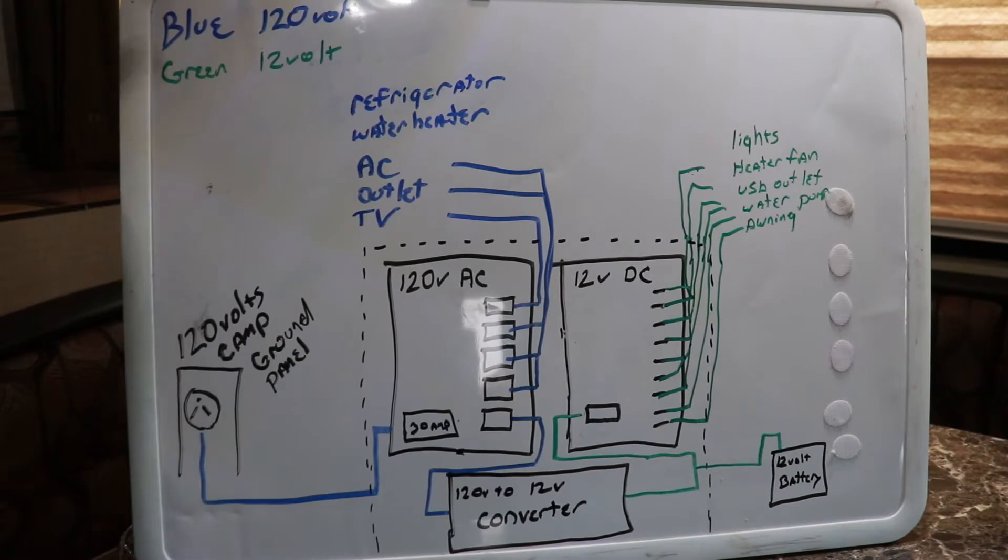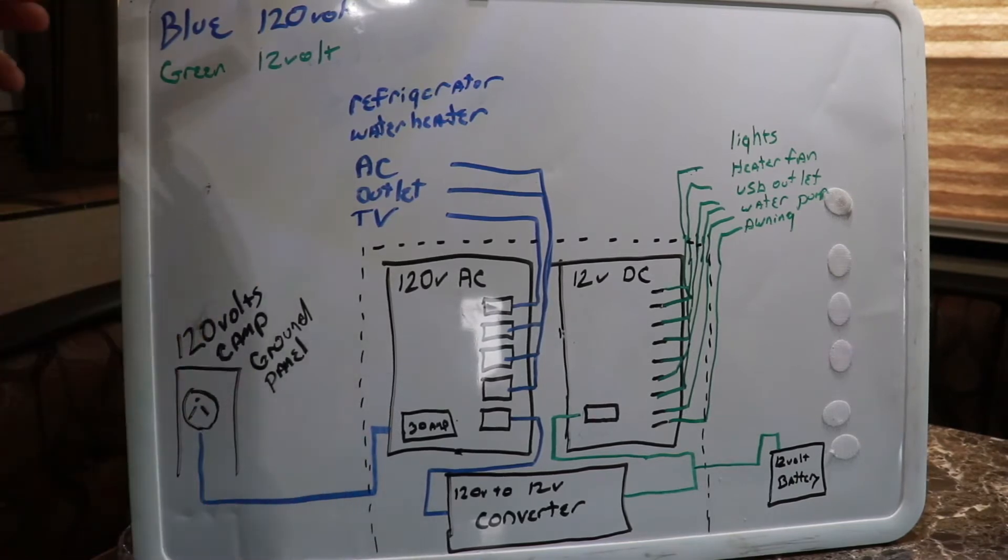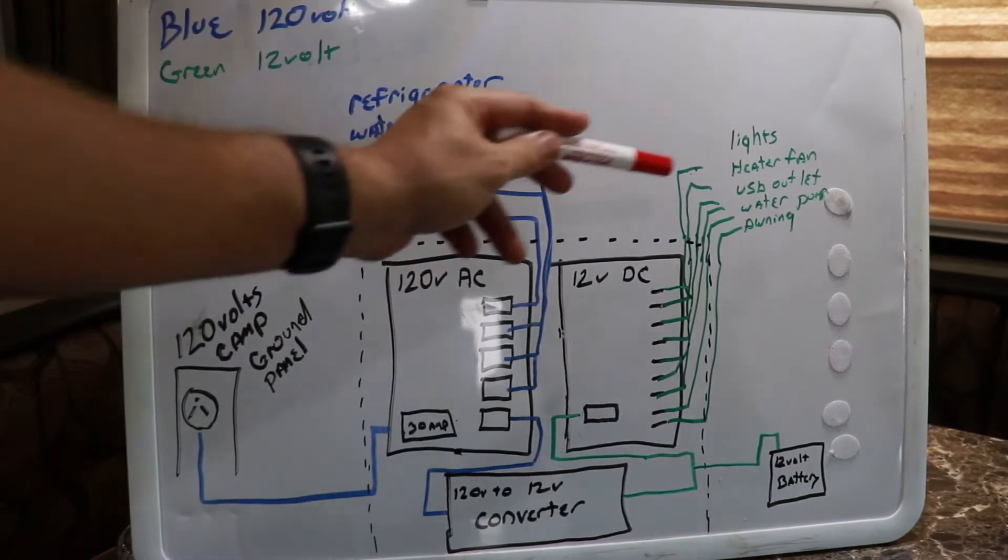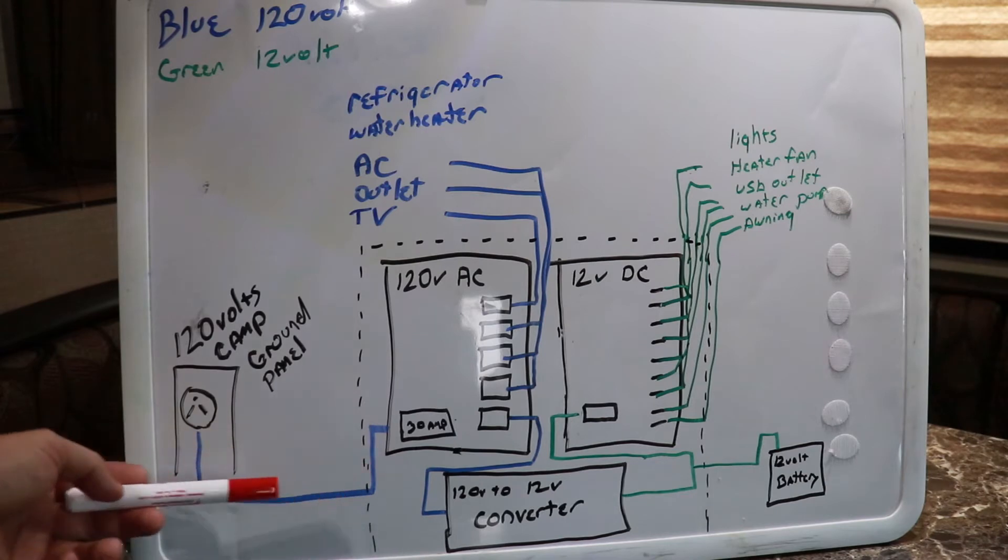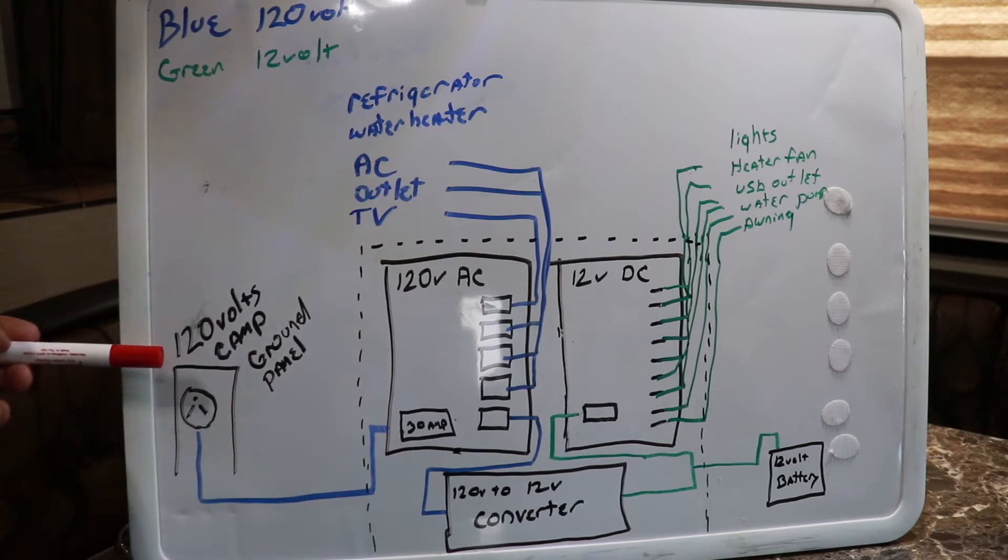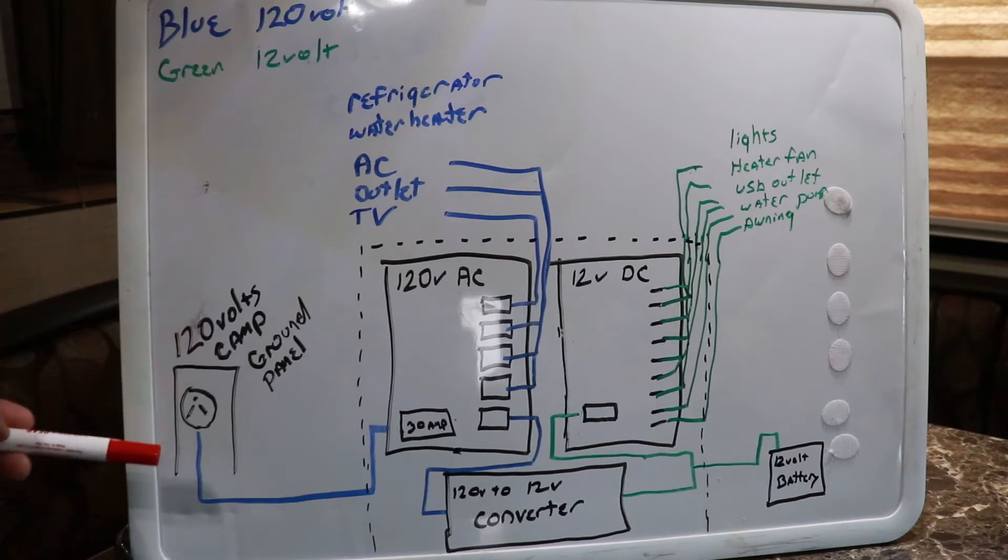As you can see, the blue represents 120 volts, the green represents the 12 volt. When you pull into your campsite, you'll take your extension cord and you plug it in to the campground pedestal. That is 120 volts, so the 120 volts will come directly into your fuse panel.